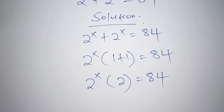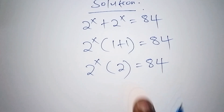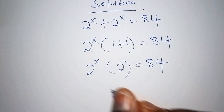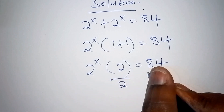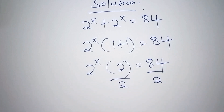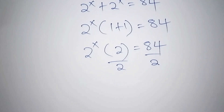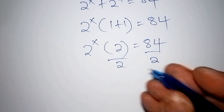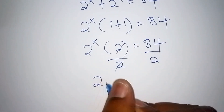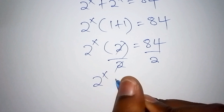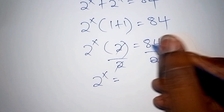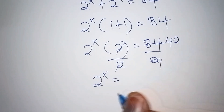The next step is to divide both sides by 2, so that we remain with 2 to the power of x. The 2 cancels, so 2 to the power of x equals 84 divided by 2, which gives us 42.